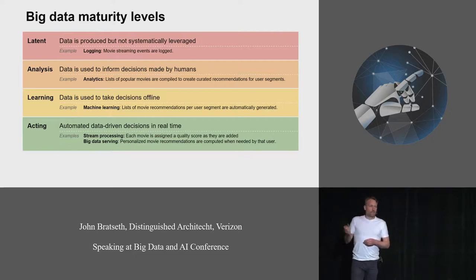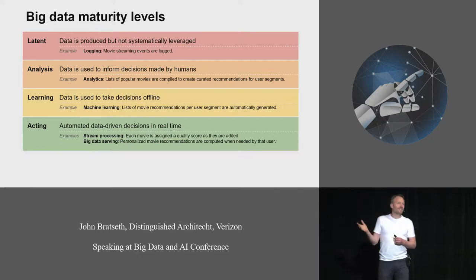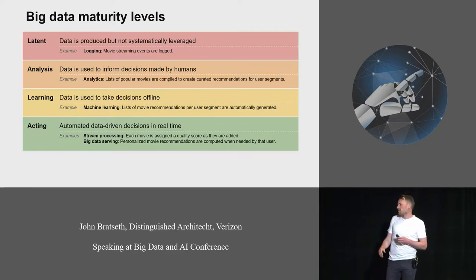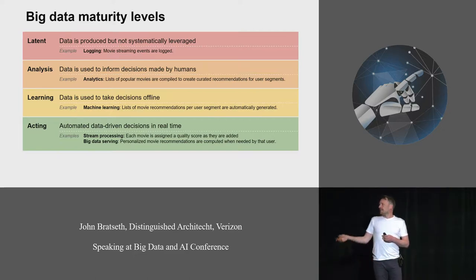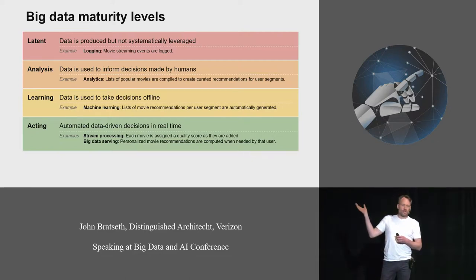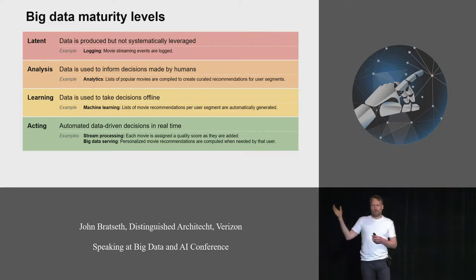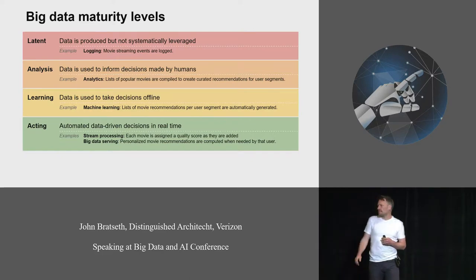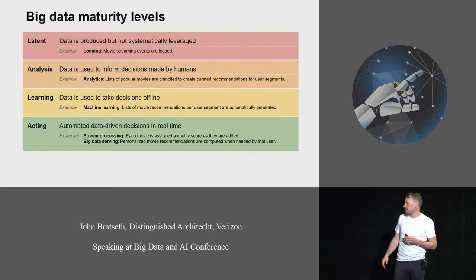Then we get to the learning stage where you try to cut the human out of the immediate loop and automatically generate the decisions that you will then replicate online as part of your application. This is where you apply machine learning. For the movie recommendation example, it would be automatically learning a list of movie recommendations for different segments of users, and then at the serving stage just showing those lists to users and rebuilding them once a day or something like that.